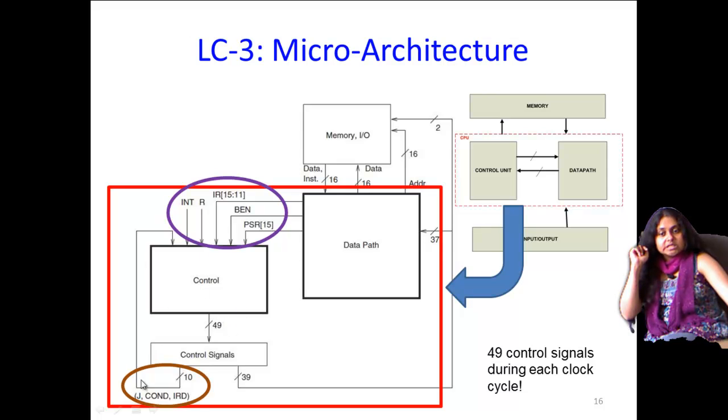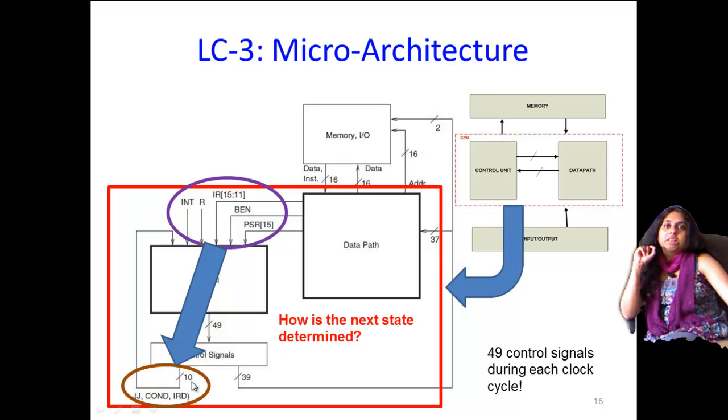From the control there are certain output signals. These are, as we talked about, the J bits, the COND bits, and the IRD bits. Now inside the control unit these input signals are used to predict the values or to determine the values of the J bit, the COND bits, and the IRD bits, which is basically bits 39 to 48 in the control word.